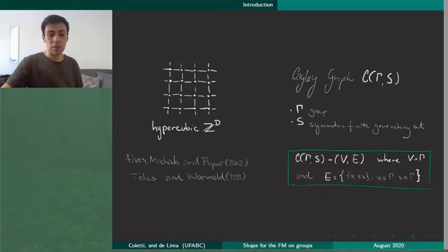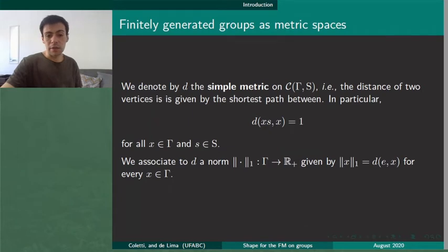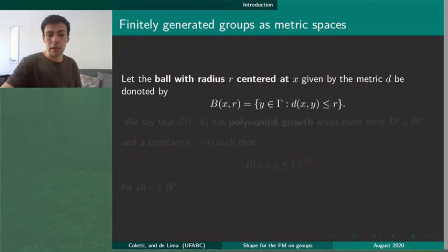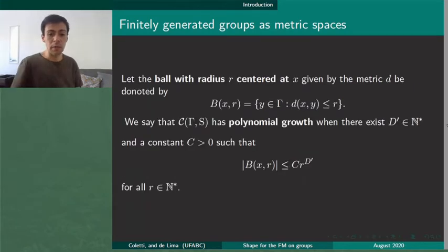Here we denote by Γ the group and S the finite generating set. And the hypercube Z^d is an example of Cayley graphs. We embed the graph with the simple metric and when we have an upper bound of the growth of the balls, we say that the graph grows polynomially.